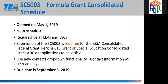The SC 5003 Formula Grant Consolidated Schedule is new. It is located under the special collections tab and is applicable to all grants. It must be completed and certified in order for your available grants to be assessed. The due date is September 3rd. However, remember that is also the due date for your ESSA, CTE, and special ed grants. Therefore, through collaboration of those programs, you do not want to wait until September 3rd to submit this schedule.